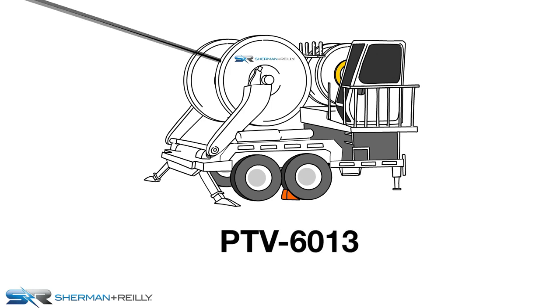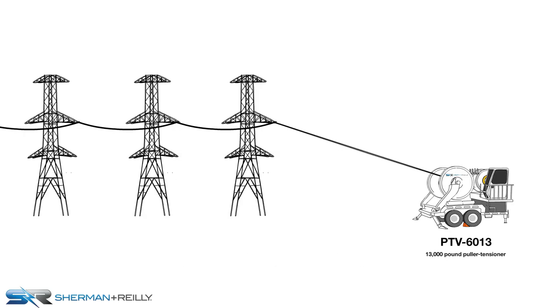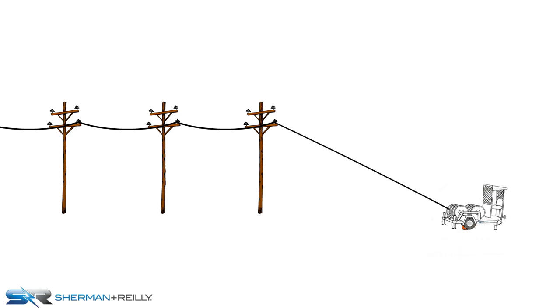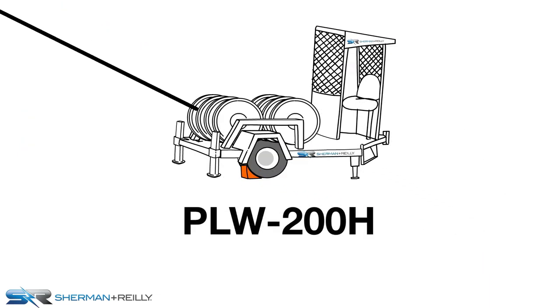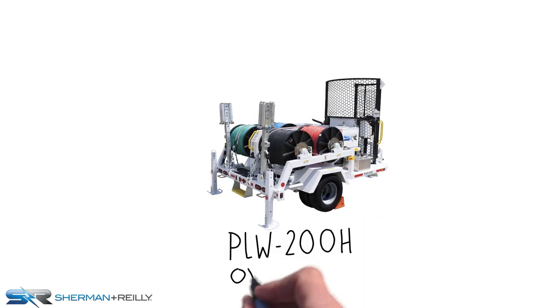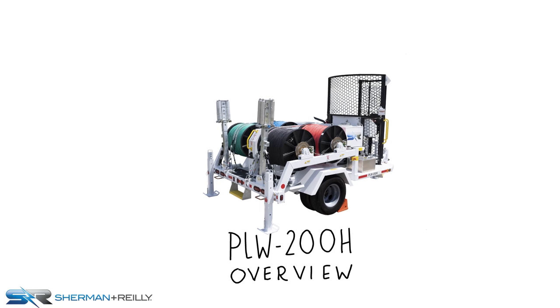Therefore, a larger piece of equipment, like a PTV 6013 13,000-pound puller tensioner, may be used. A smaller distribution job with smaller conductor and shorter pull lengths can be managed with a smaller unit, like the Sherman-Riley PLW-200H, which is a 2,000-pound four-drum rope unit. This animation provides an overview for pulling conductor using the Sherman-Riley PLW-200H.